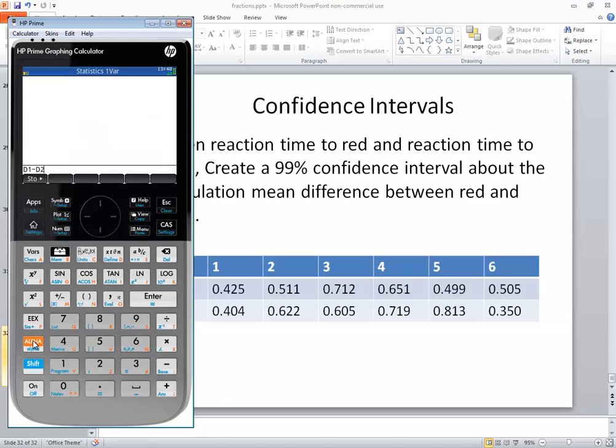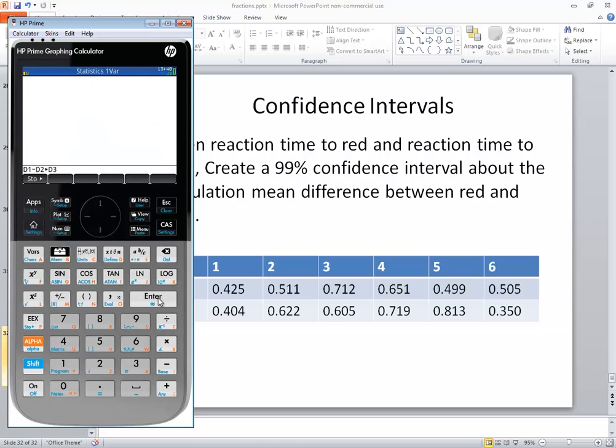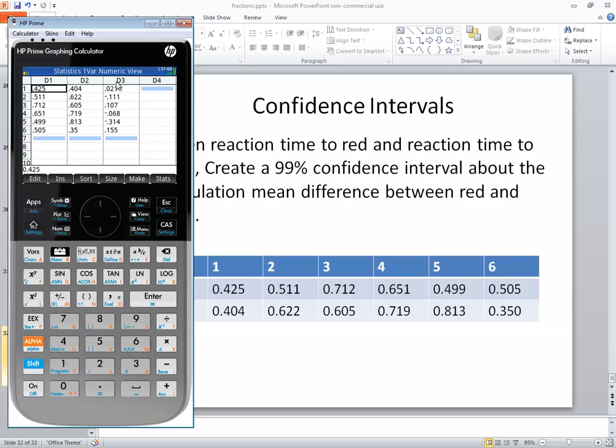And I want to store this. The store is, I do shift, and then it's EX key. And you see it puts a little triangle on there. And then I want to do VARs, 1 for statistics, 1 VAR, 4 for numeric, and 3 for D3. And then press enter. Now if I go back to my numeric view, I see that D3 has numbers in it. And specifically, they're taking the D1 value minus the D2 value. For example, 0.425 minus 0.404 gives us 0.021.